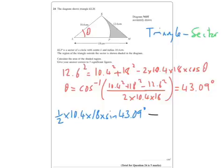And then minus — the sector is going to be pi times 10.4 squared times 43.09 over 360, because that's the fraction of the circle we've got.